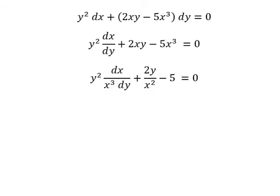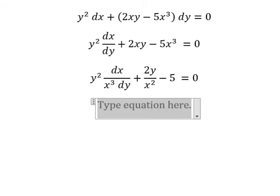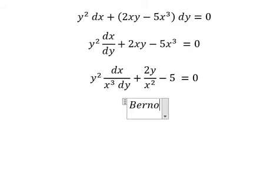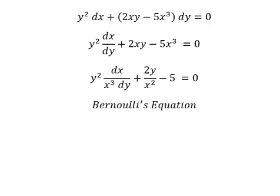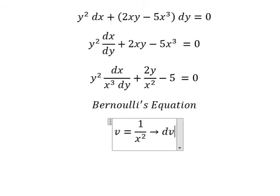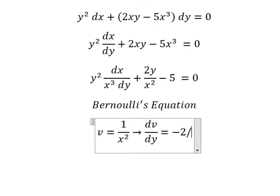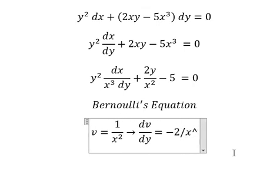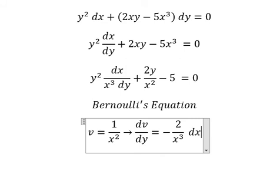This is about Bernoulli's equation. So I will put v equals to 1 over x squared. Then we need to take the first derivative of both sides, and we have dv over dy equals to negative 2 over x to the power of 3, times dx over dy.